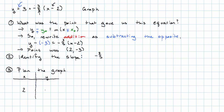From our given point, when x is 2, y is negative 3. For the slope, I'm going to put the negative sign in the numerator, so when x goes up by 5, y goes down by 3. Starting at x equals 2, going up by 5 gets us to 7; y starts at negative 3, goes down by 3 to negative 6. Going backwards: 2 minus 5 is negative 3 for x, and what plus negative 3 equals negative 3 gives us y equals 0.